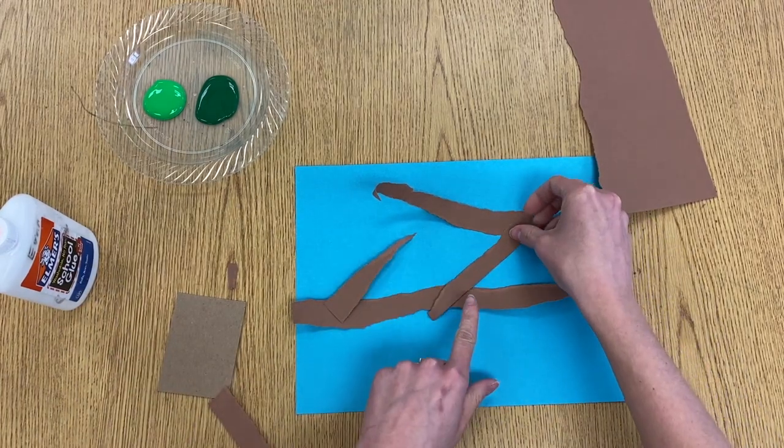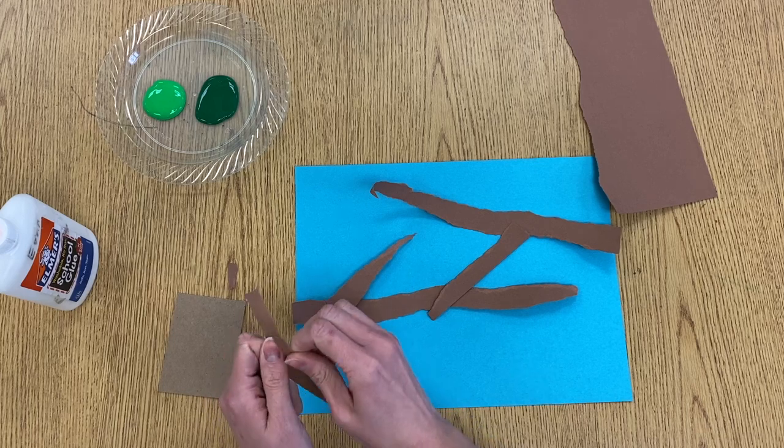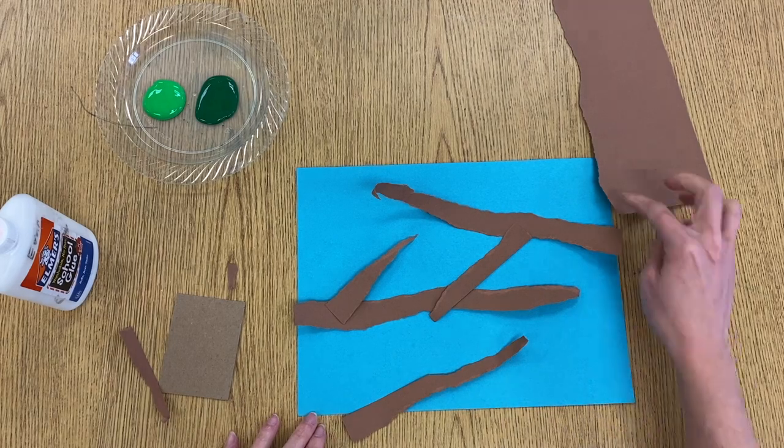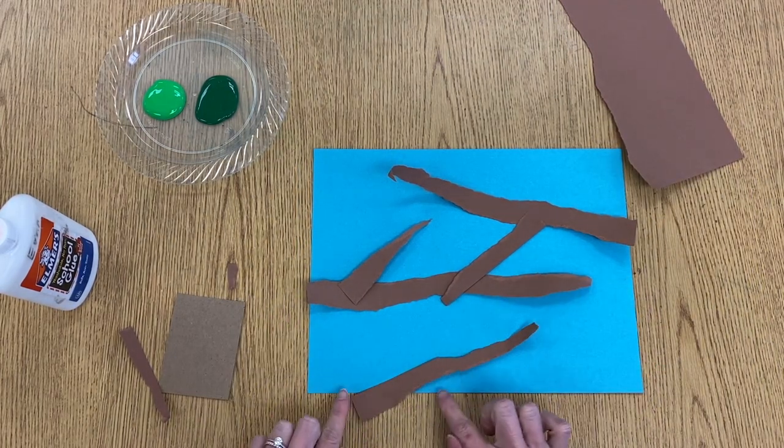Your branches can cross over. You can go in front and behind using overlapping. And if your branches go over the page like this, that's totally fine because we can trim them off later.